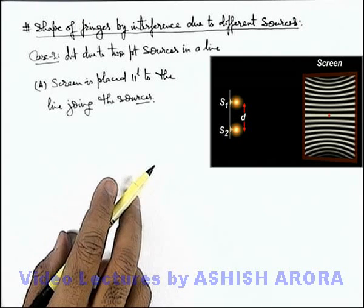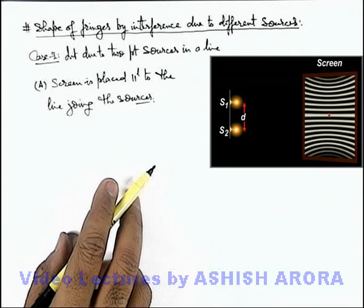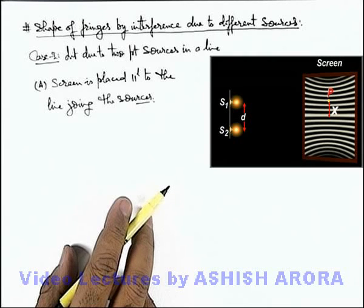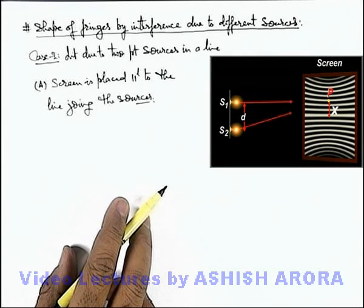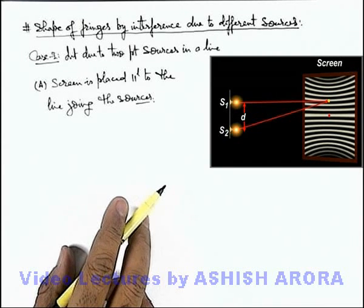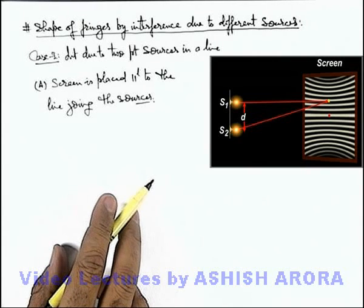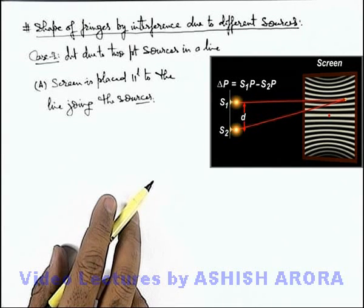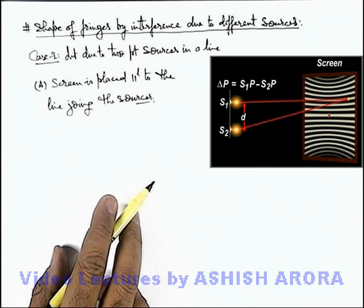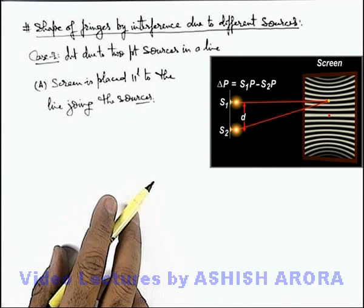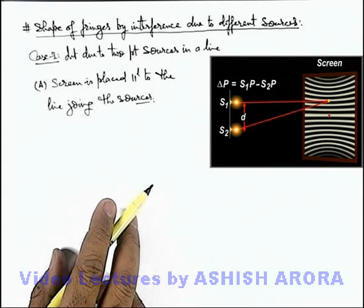Now let us understand why the shape of fringes is hyperbolic. If we consider a point P on the screen, the path difference from the 2 sources at point P is a specific value. On this screen, this will be a hyperbolic region where at every point the distance difference of the point with the 2 sources will remain constant. So everywhere, if the path difference is the same, the intensity of light will also remain the same — that's why the fringes are hyperbolic in nature.